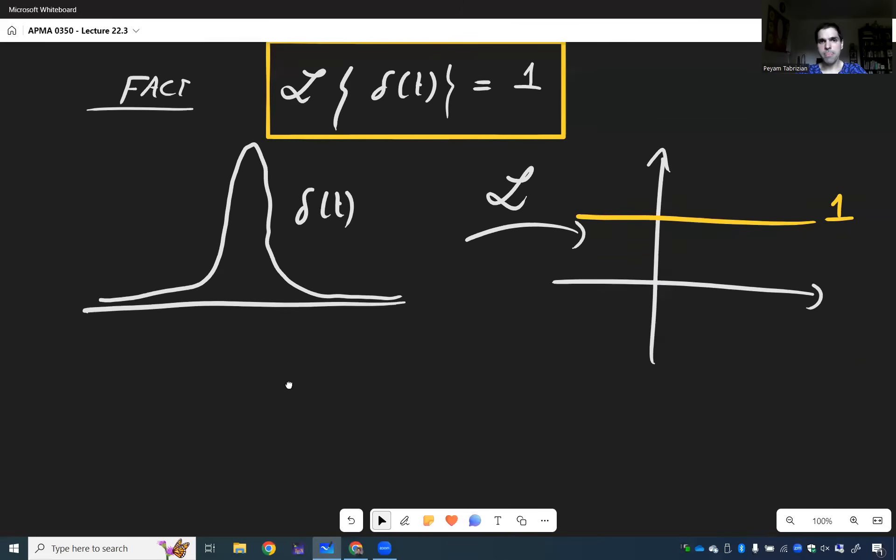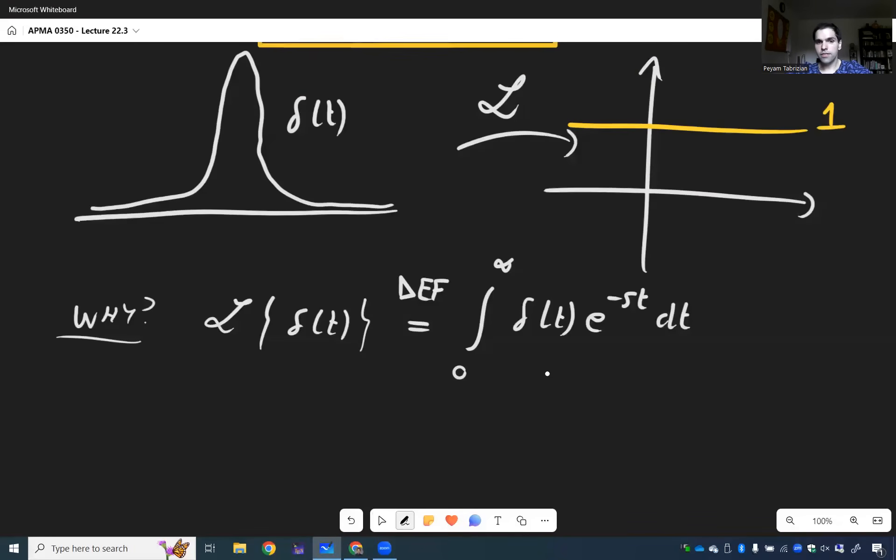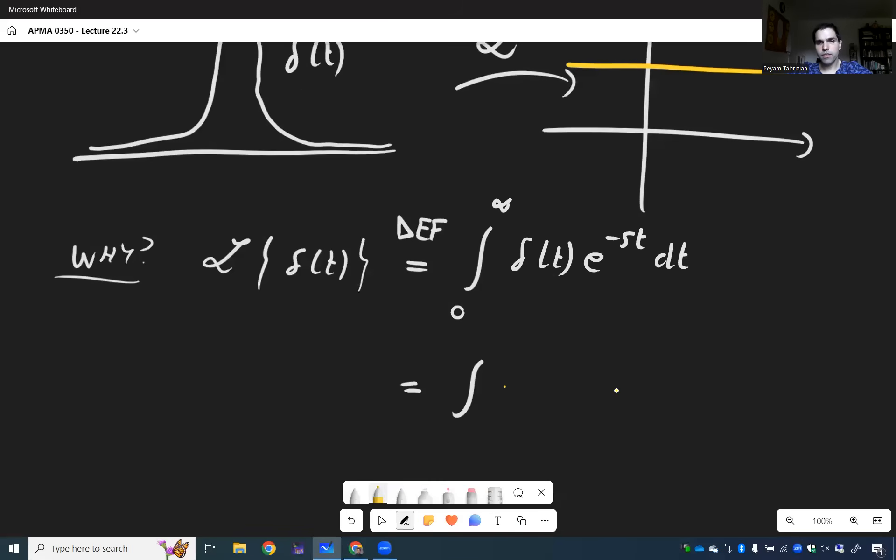We just use the definition of the Laplace transform. So why? Because first of all, the Laplace transform of delta(t), by definition, that's the integral from zero to infinity of delta(t) times e^(-st) dt. But remember that Dirac delta is zero for negative values of t, so this is actually the same thing as the integral from minus infinity to infinity of delta(t) times e^(-st) dt.